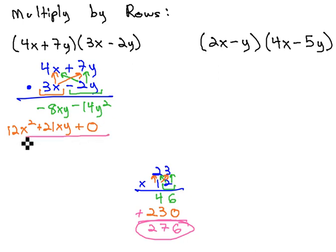What's nice about this process is it has already lined up our like terms for us in the middle. We can just combine to get 12x squared, and negative 8xy plus 21xy is positive 13xy minus 14y squared, and we have our product.